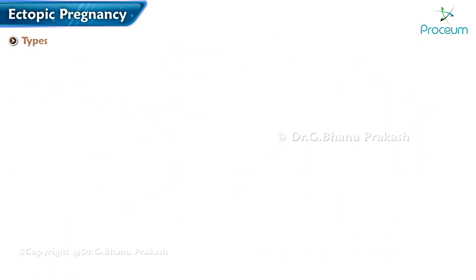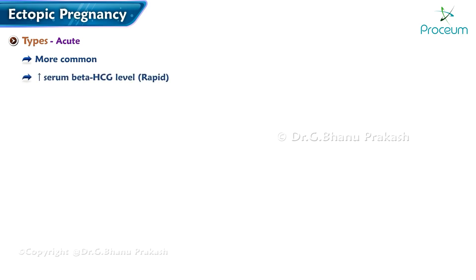Types of ectopic — acute: acute ectopic pregnancies are more common, produce a high serum beta-hCG level, and grow rapidly, leading to timely diagnosis. These carry a greater risk of rupture.